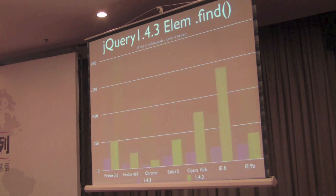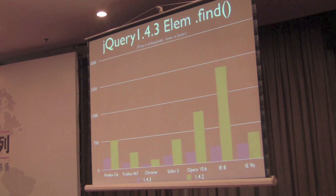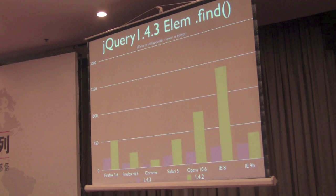We're also able to improve the performance of our find method. We've been improving this for a while, but this was due to the new Selectors API specification created by the W3C. This specification gives the ability to pass in CSS selectors and find elements in a page. This is something that we use absolutely everywhere in jQuery, and this is something that will make all applications faster as a result.